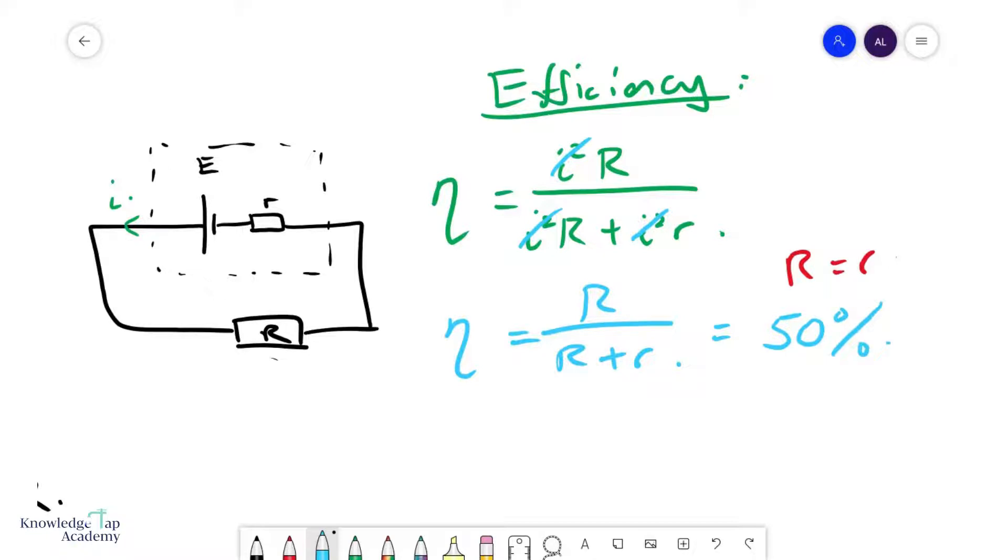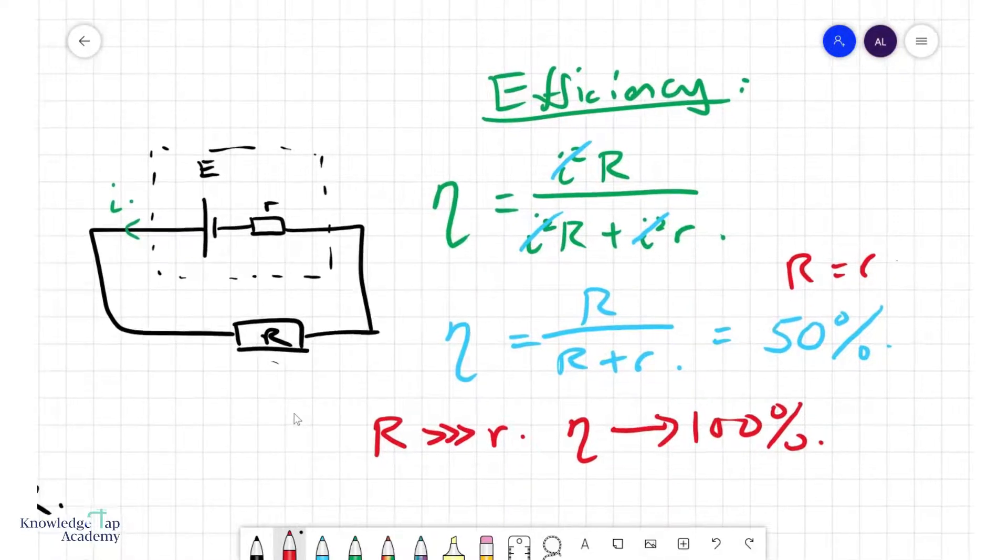In fact, how you should maximize your efficiency is you can allow R to be a lot greater than r, in which case this fraction will tend towards 1, which means it tends towards 100%. You'll never get there, but you'll get pretty close if your R is very much larger than your r. Now we know the two conditions for power and efficiency.